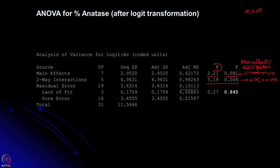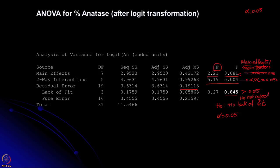Here again we are taking an F-ratio — this is an ANOVA table. Our hypothesis is that H0: there is no lack of fit. Alpha is 0.05 and the p-value is greater than 0.05, therefore we say H0 is not rejected. Therefore there is no lack of fit, and the model we have chosen completely explains the logit transformed percentage anatase.